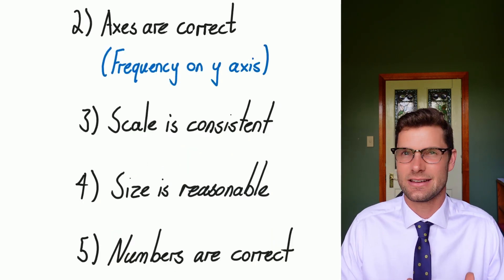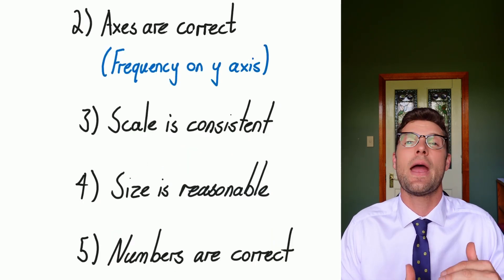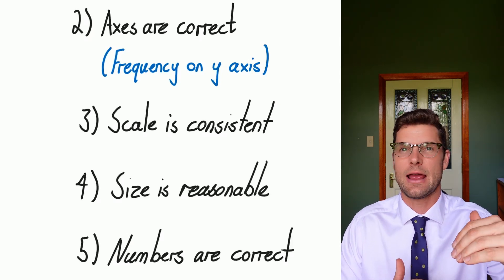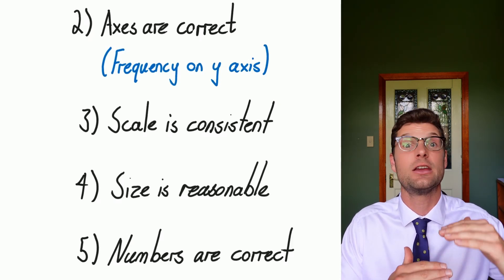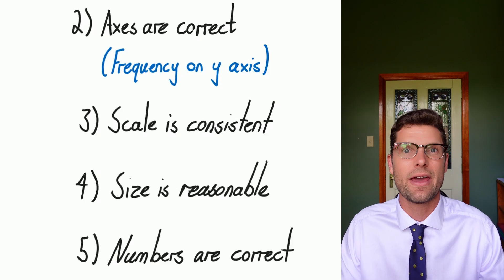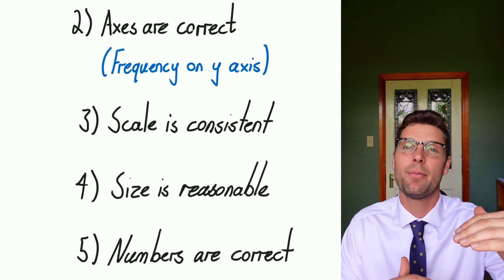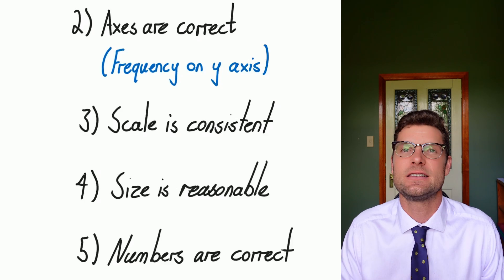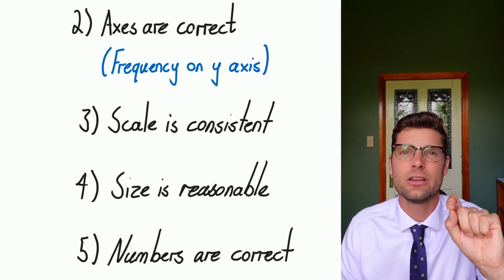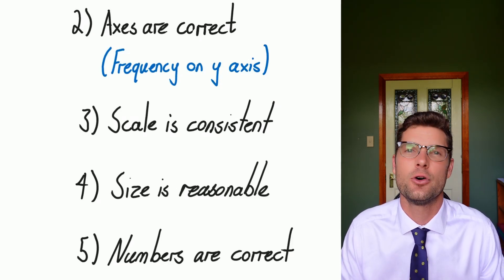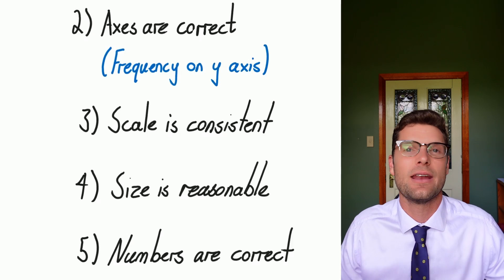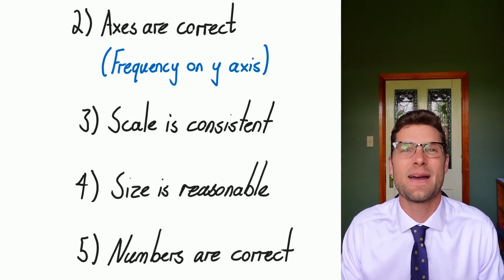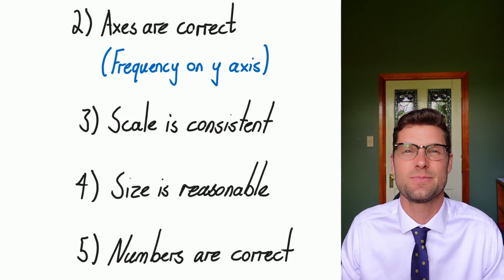The scale must be consistent — every time you put a dash on your graph, it's going up by the same amount. That number can be whatever you want: going up by fifties, hundreds, whatever — but it's got to be going up by the same amount every single time. We also need the size to be reasonable. If you do a really small graph, you will lose a mark. And if you do one that's bigger than an A4 piece of paper, your teacher is probably going to take a mark off too. So just make sure it takes up the right amount of space.